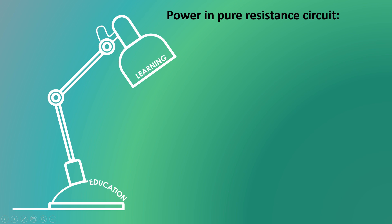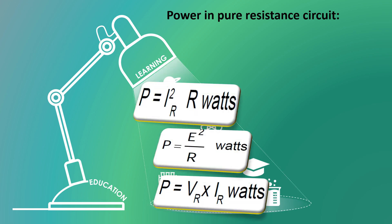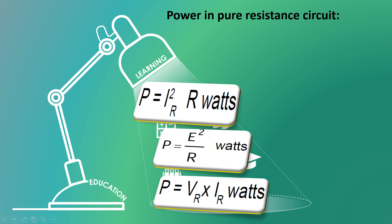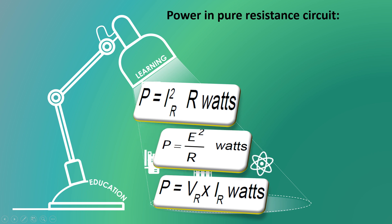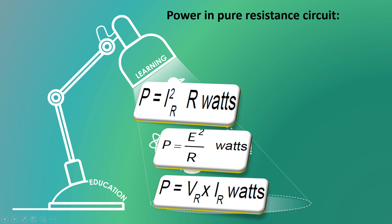Power in pure resistance circuit. Power equals to I square R. Power equals to E square divided by R, or P equals to V square divided by R. Power equals to V into I. These three formulas are there to find the power in pure resistance circuit.